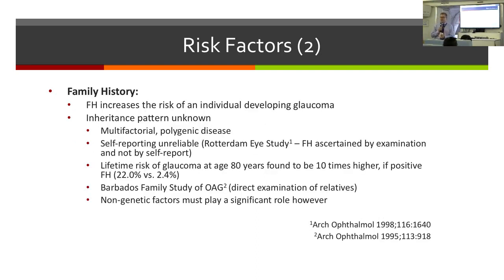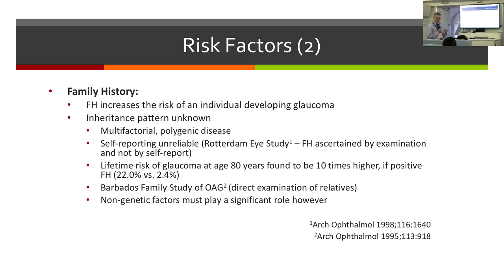We always ask about family history in glaucoma. We know that family history increases the risk, and that the inheritance of glaucoma is multifactorial and polygenic. From epidemiological studies, the lifetime risk of glaucoma in someone aged 80 is 10 times higher if there is a positive family history.